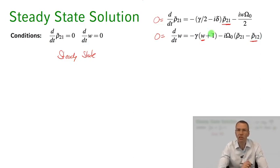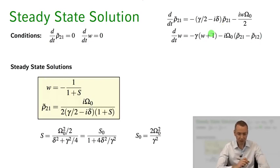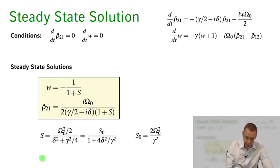And this is what I've done here. I've written the solutions down here and you see that the inversion is given by minus 1 divided by 1 plus s, where s is the so-called saturation parameter of the system.